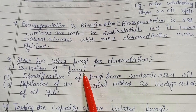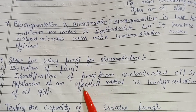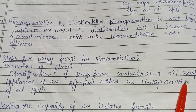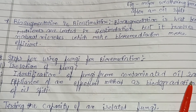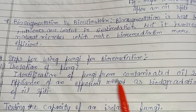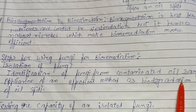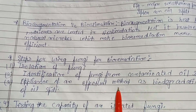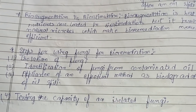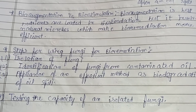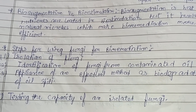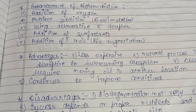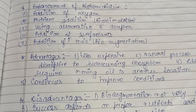The steps for using fungi in bioremediation of pollutants are: first, isolation of fungi from a contaminated site; then identification of fungi from the contaminated oil sample to determine which fungi should be utilized; followed by application of an effective method — either bio-augmentation or bio-stimulation; and finally, testing the capacity of the isolated fungi.